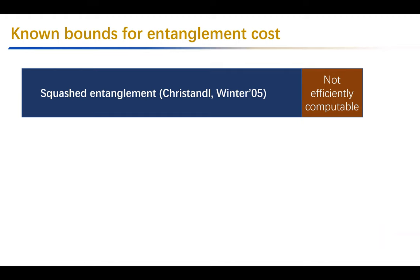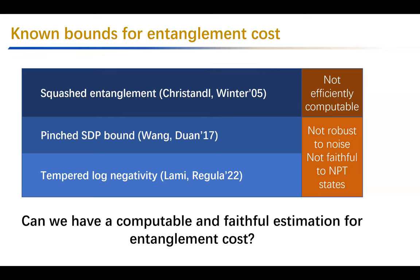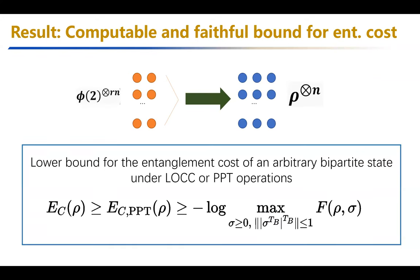Known bounds include the squashed entanglement, introduced by Christandl and Winter in 2004, defined by minimizing the conditional mutual information of an extended state. Unfortunately, it is not efficiently computable, though it is faithful. There is also an SDP bound from my previous work in 2017, and recently Lami, Regula, and Bartosz introduced a tempered log-negativity bound for entanglement cost. However, these two bounds are not very robust to noise and are not faithful for two-NPT states.